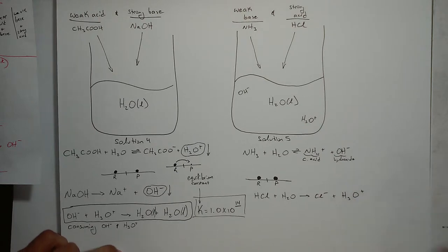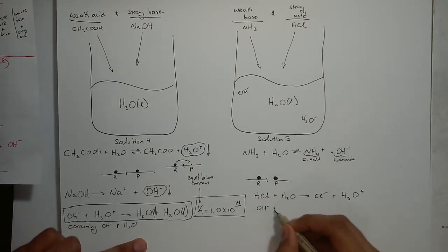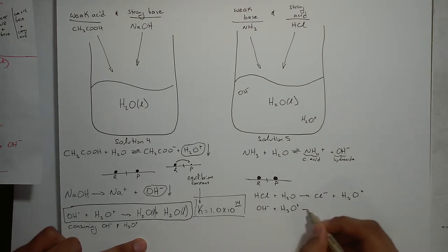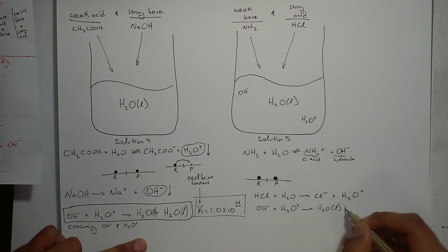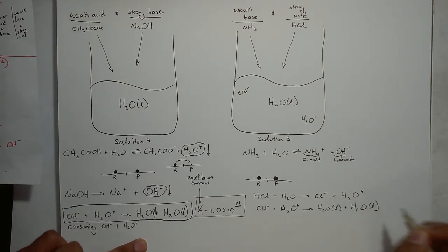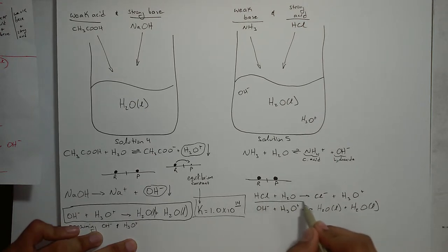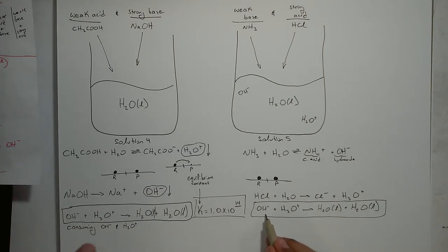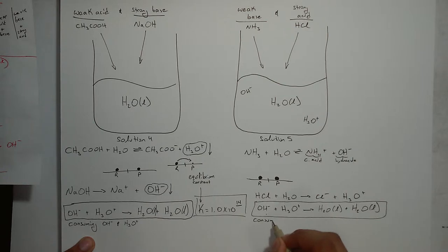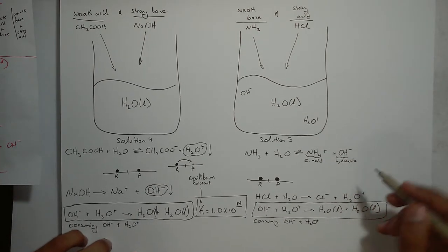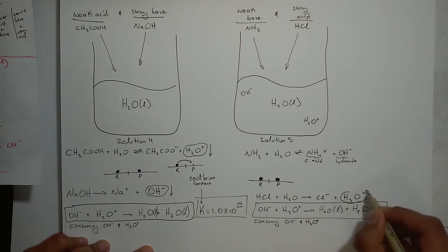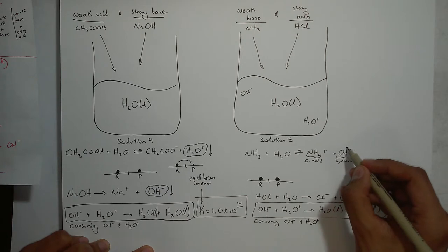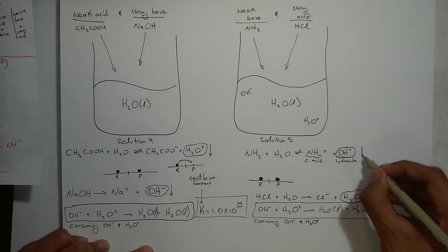Now remember, the same exact thing is going to happen here. The OH- is going to react with the H3O+. OH- reacts with H3O+, and that's going to produce two H2O molecules. And again, notice what's happening here. Look at this bottom reaction. What is this reaction telling you? This reaction is telling me that I'm consuming OH- and I'm consuming H3O+. So if I look at these two reactions, I can say that the concentration of H3O+ is dropping, and that the concentration of OH-, the hydroxide ion, is also dropping.